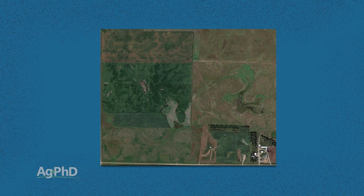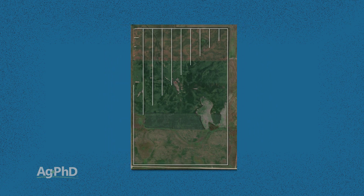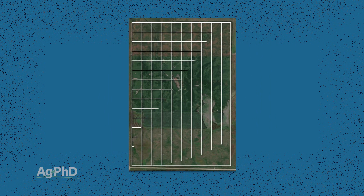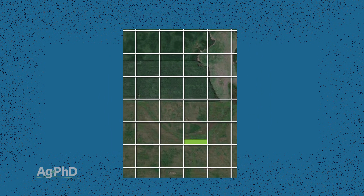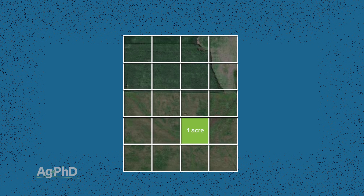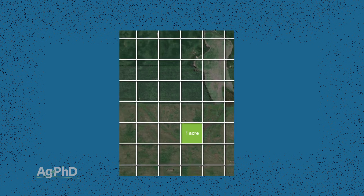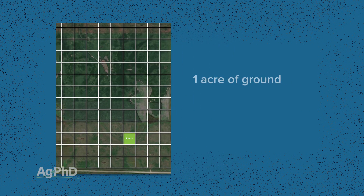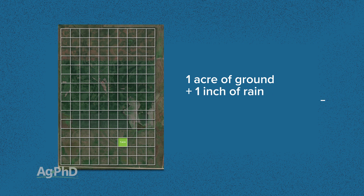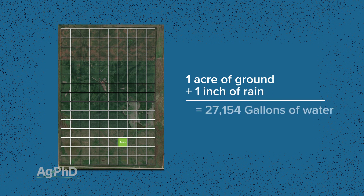A lot of times you'll hear, 'we got an inch of rain overnight.' Well, how much actually is an inch of rain when you spread it out over a whole acre? An acre-inch of rain is 27,154 gallons. So in other words, if you had one acre worth of ground — which is about like a football field — and you get an inch of rain on it, that means on that acre you got 27,154 gallons. That is a lot of water.